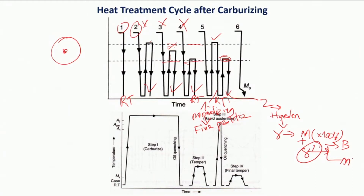So in either case there is a possibility of expansion or contraction - volume change - and that means it may develop cracks on the surface, which is undesirable. So after the final quenching we actually carry out tempering to convert part of the martensite into tempered martensite. Then we carry out a final tempering at a lower temperature which is only for stress relieving.